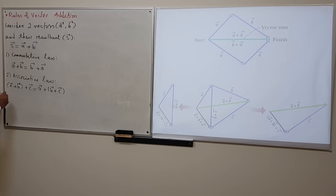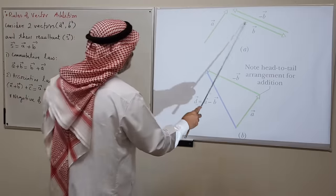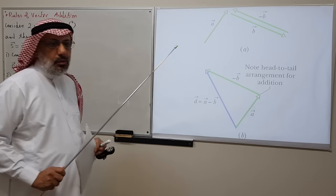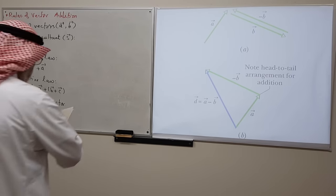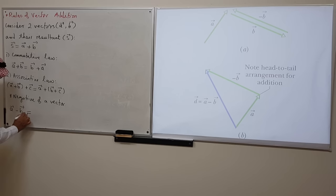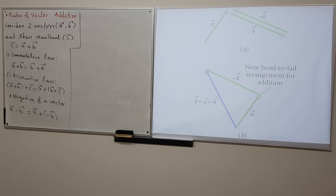The negative of a vector is another vector that has the same magnitude as the original but points in the opposite direction. This enables us to deal with subtraction of vectors: A − B is treated as A + (−B), meaning you add vector A to the negative of vector B.